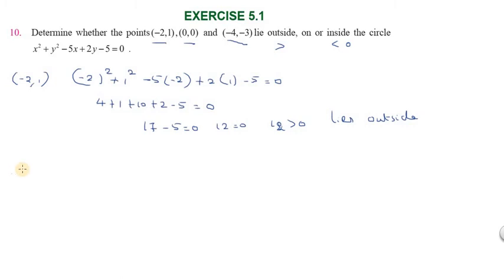Second point: (0,0). 0² + 0² - 5(0) + 2(0) - 5 = 0. This gives -5.